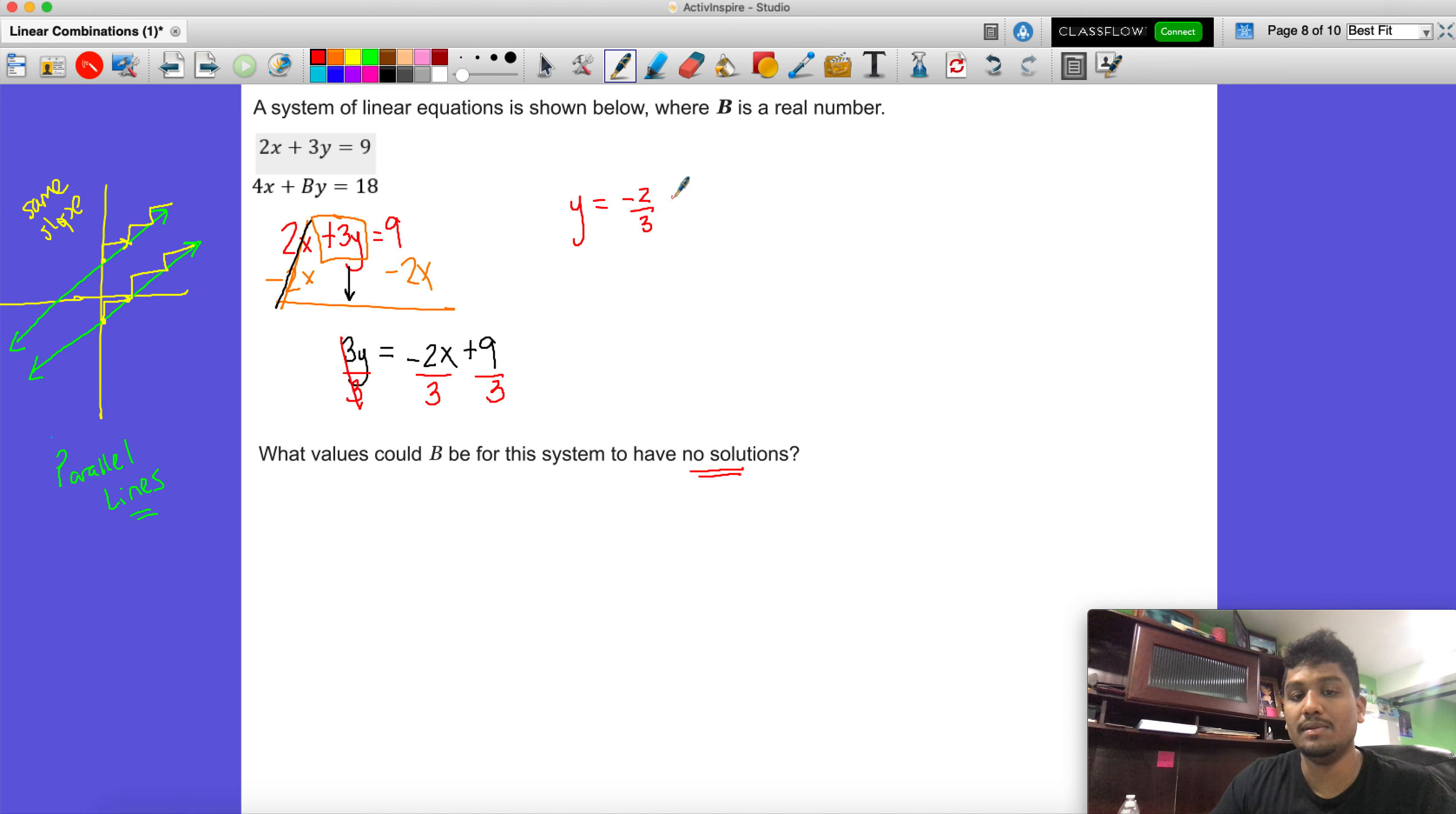This becomes y equals negative 2 over 3. This cannot be reduced, so we're going to keep it like this. Plus, and then 9 divided by 3 is 3. So this is what the slope-intercept form, or the y equals mx plus b, is for this equation.